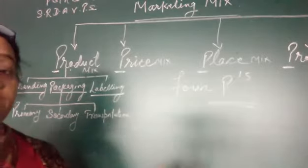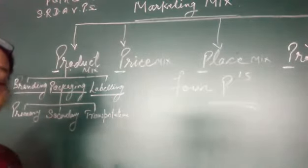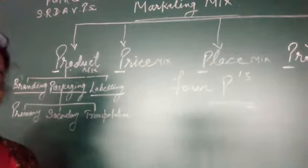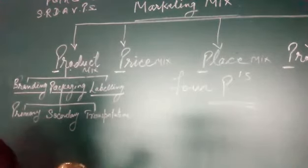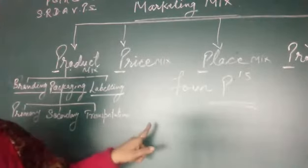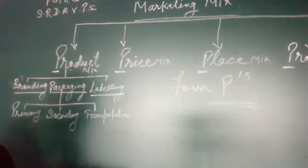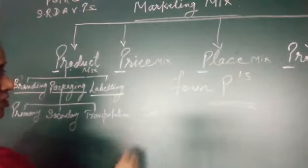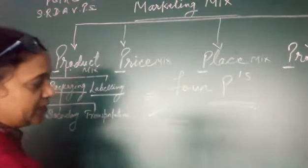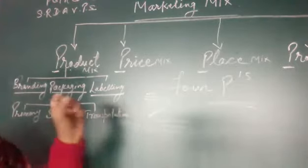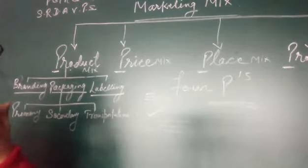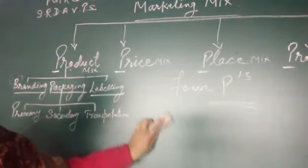Brand name is the part of the brand which can be spoken — that is the brand name. Third is brand mark. Brand mark is a symbol or sign assigned to a product — for example, a specific sign or three lines as a symbol. When you decide on a visual symbol for your product, that becomes the brand mark.